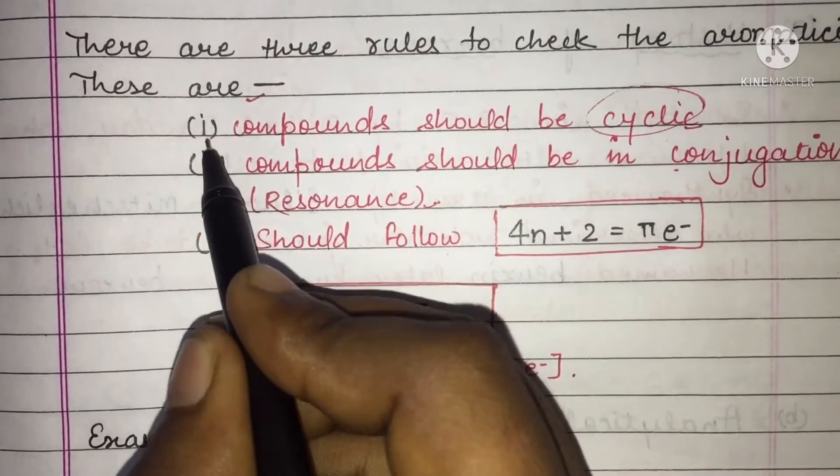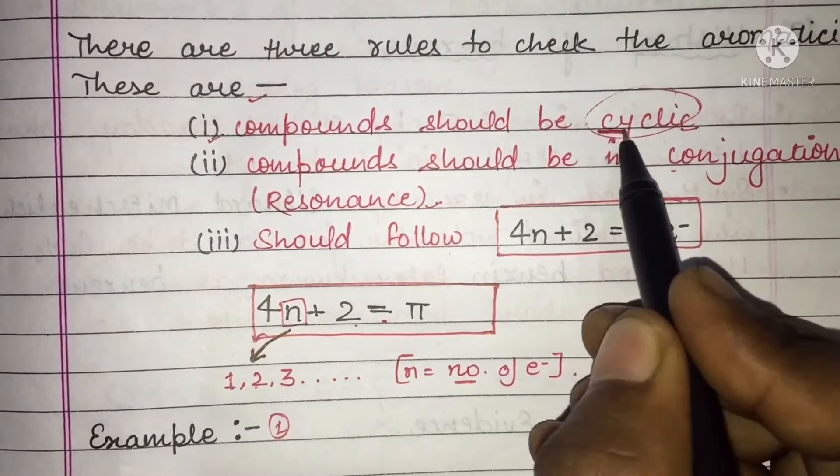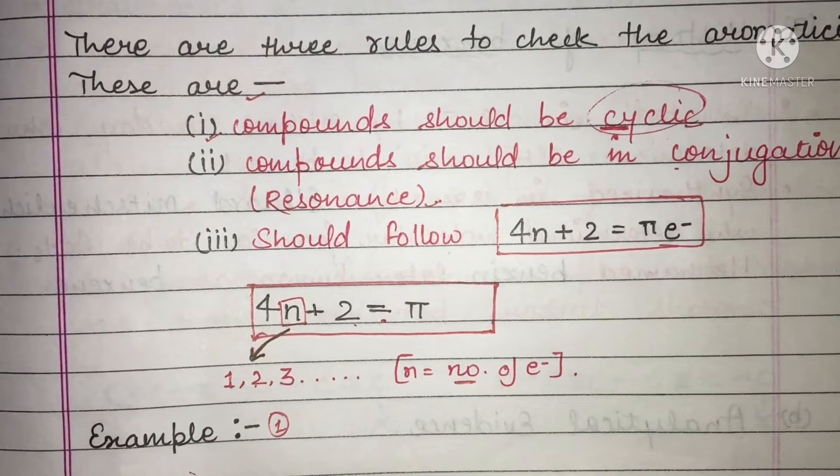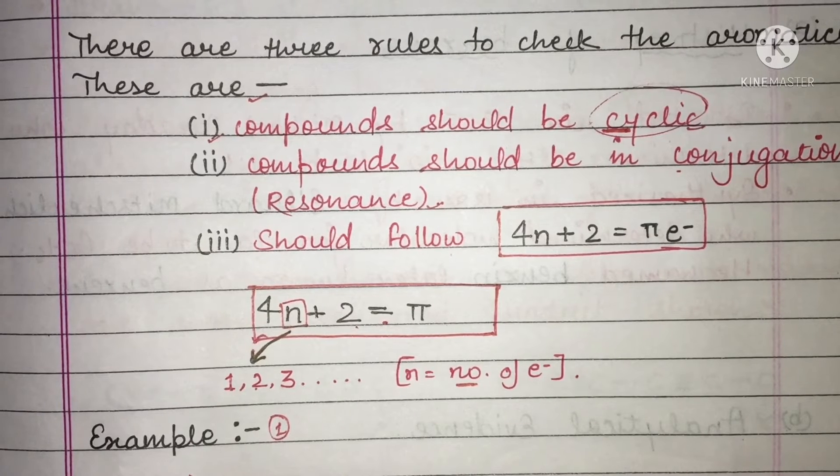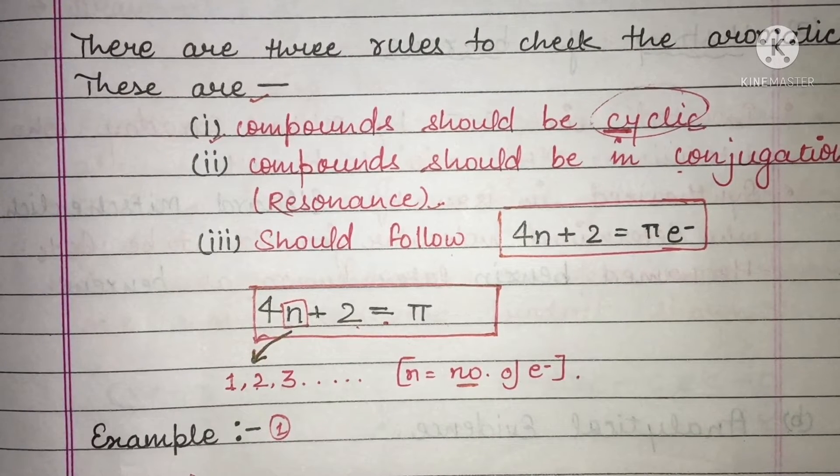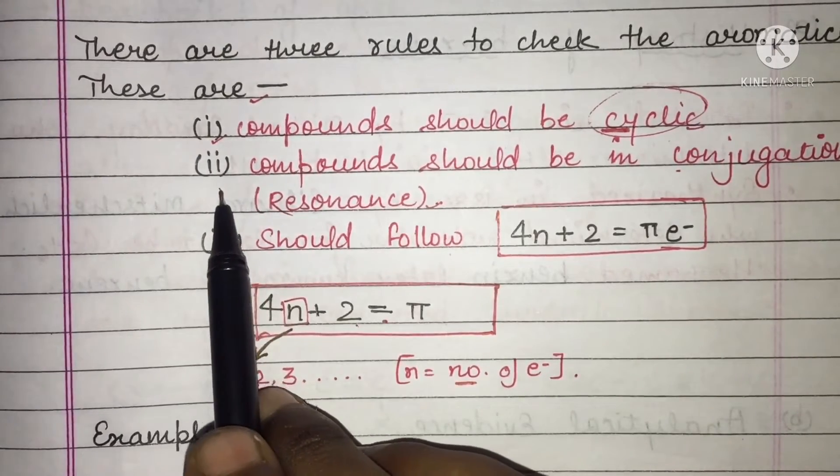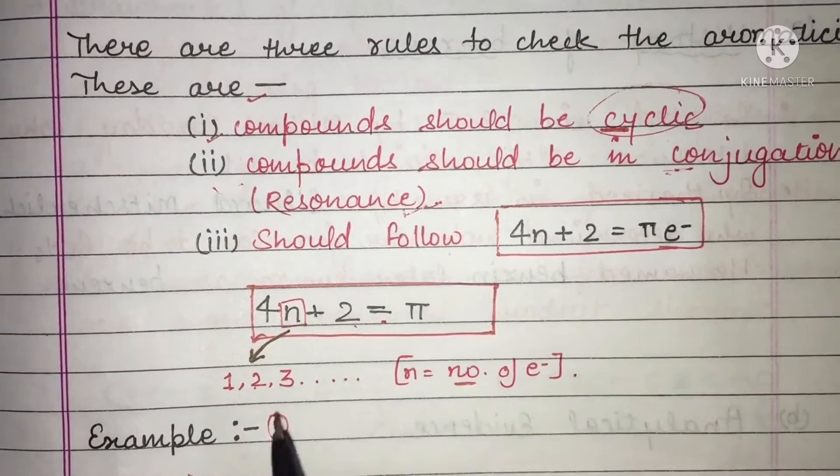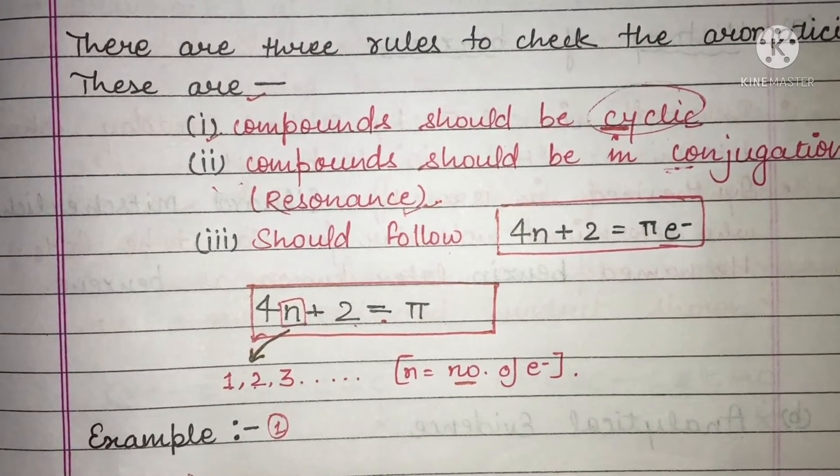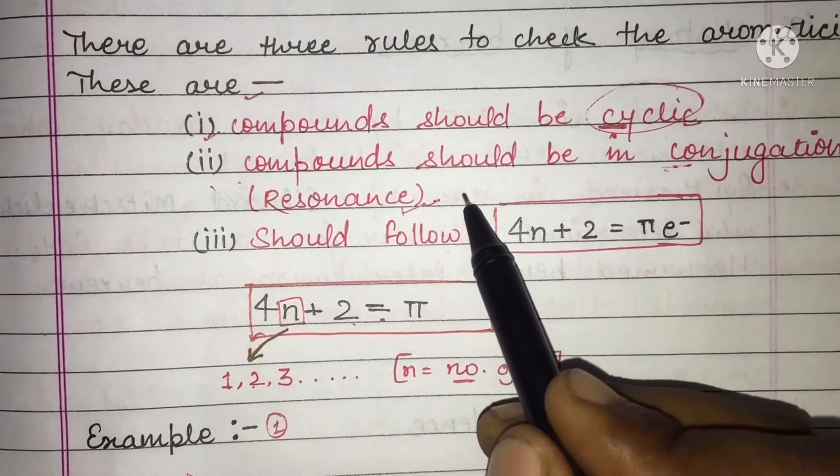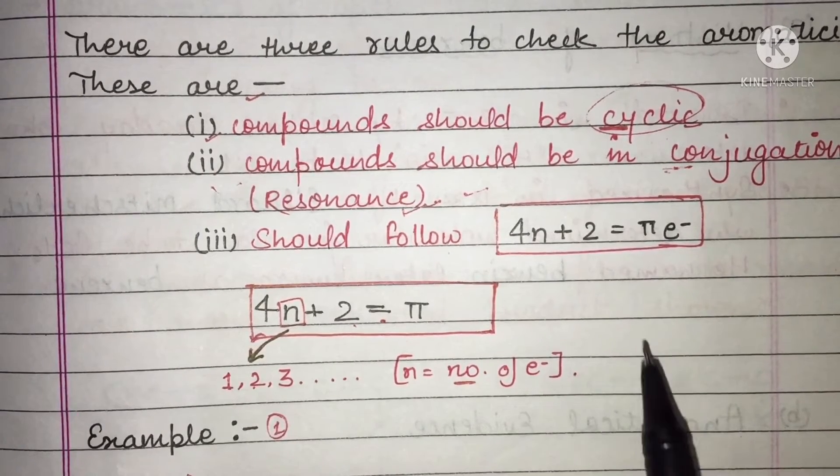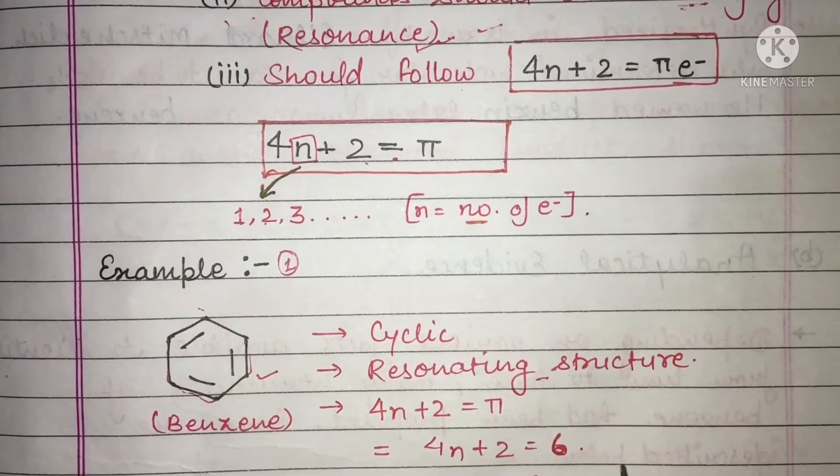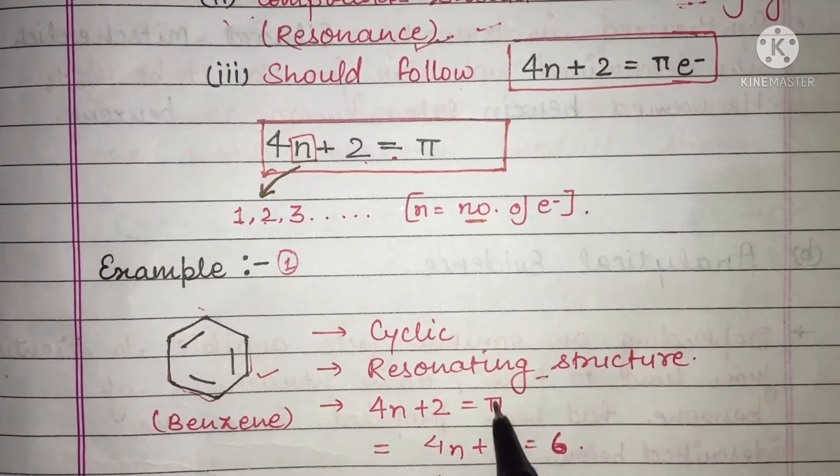We see that the first rule is satisfied - benzene is cyclic. The second rule is also satisfied - it has resonating structure. Rule 2 is also accomplished. And third one is 4n+2 is equal to π electrons. So let's check out the 4n+2 is equal to π electrons.